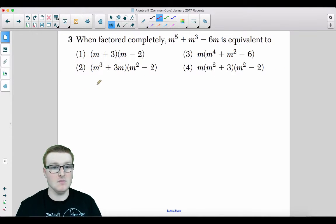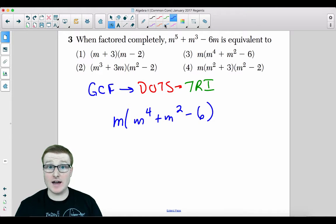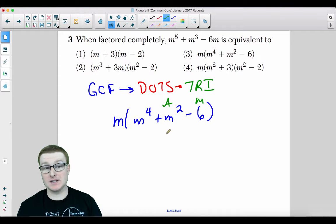Moving on to number 3. When factored completely, m to the 5th plus m to the 3rd minus 6m is equivalent to what? So in this case, do GCF dot to trinomial. So you have the greatest common factor, followed by the difference of two perfect squares, followed by the trinomial method. The GCF in this case is m. Take it out. We're left with m to the 4th plus m squared minus 6. And let's go ahead and continue to factor this. We could factor this by the am method of factoring. What adds to positive 1 and multiplies to give you negative 6?